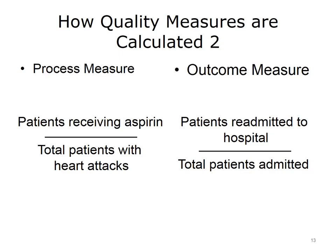The example of an outcome measure — hospital readmission within 30 days of discharge — is calculated by placing the total number of hospital admissions in a given time period in the denominator. Different measures might exclude those who died, were transferred, or left against medical advice from the denominator. The numerator is made up of those admissions where the patient was readmitted to the hospital within 30 days of discharge. The goal in this case is to have the numerator as close to zero as possible — that is, that no patients would need to be readmitted.